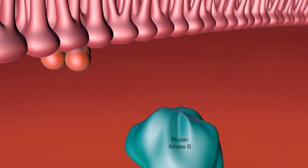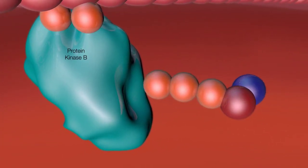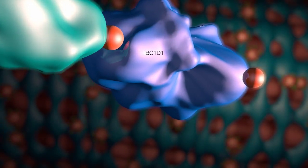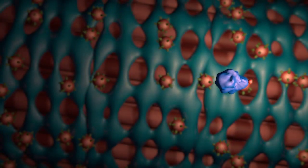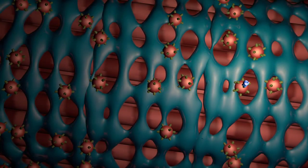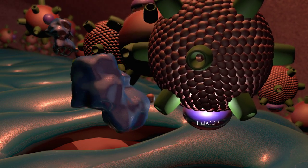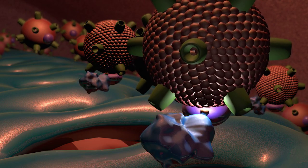PIP3 recruits and activates protein kinase B, or AKT. Protein kinase B phosphorylates protein TBC1D1, which travels deeper towards the cellular storage compartment. TBC1D1 activates RabGDP, converting it to active RabGTP.